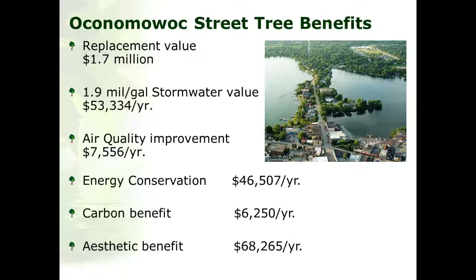Once the data is in iTreeStreets, the city's existing system manages and tracks assets while Streets provides complementary ecosystem service information — stormwater interception, air quality improvement, energy conservation, carbon values, aesthetic values, and structural replacement value. This information complements what they already have in place, and it literally took just a couple of days to achieve.